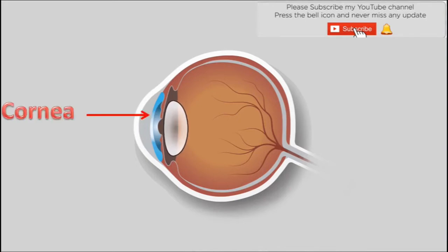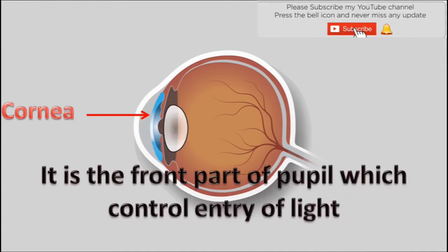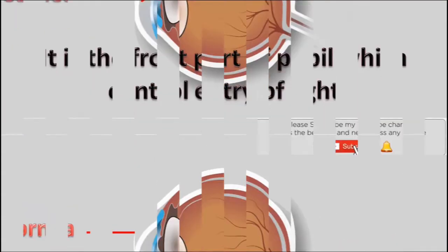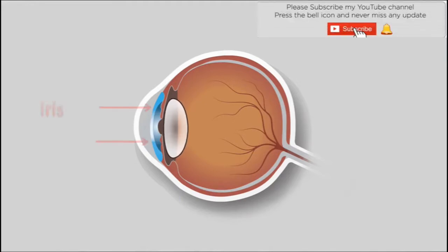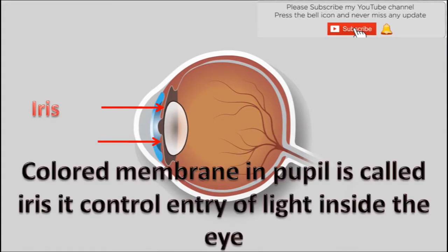Cornea — it is the front part of the pupil which controls entry of light through the pupil. Iris — the colored membrane in the pupil is called iris. It controls entry of light inside the eye.